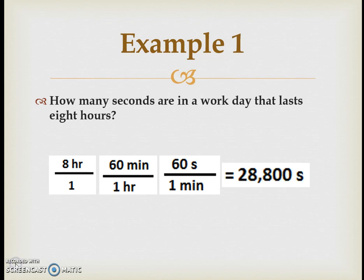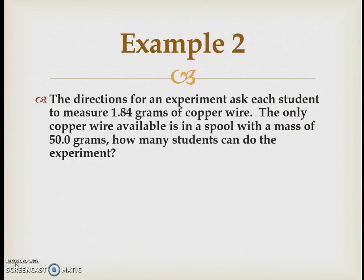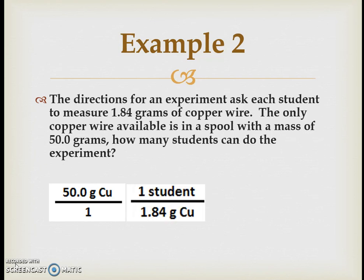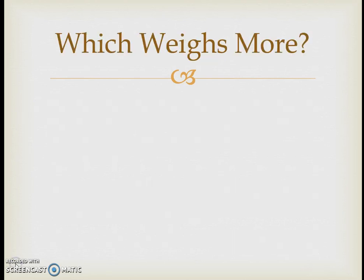Dimensional analysis can also be used where you have different comparisons between units. For example, given a 50-gram spool of copper and needing 1.84 grams of copper wire per student, how many students can do the experiment? Start with 50 grams over one, then use the conversion factor of 1 student per 1.84 grams of copper. Grams of copper cancel, leaving the unit of students. The result is 27.174, so 27 students can do the experiment.